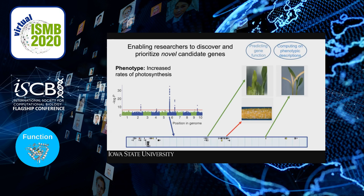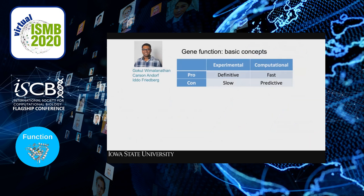In my research group, we associate images, phenotypic descriptions, gene functions, and related information onto genomes so researchers can make good decisions about which genes to work on first. Gokul Wimelanathan, a student who graduated about a year ago, was working in gene function both computationally and experimentally in Eric Volbrich's lab. He described the problem: figuring out gene function in the lab is definitive but slow; computational prediction is fast but only predictive.